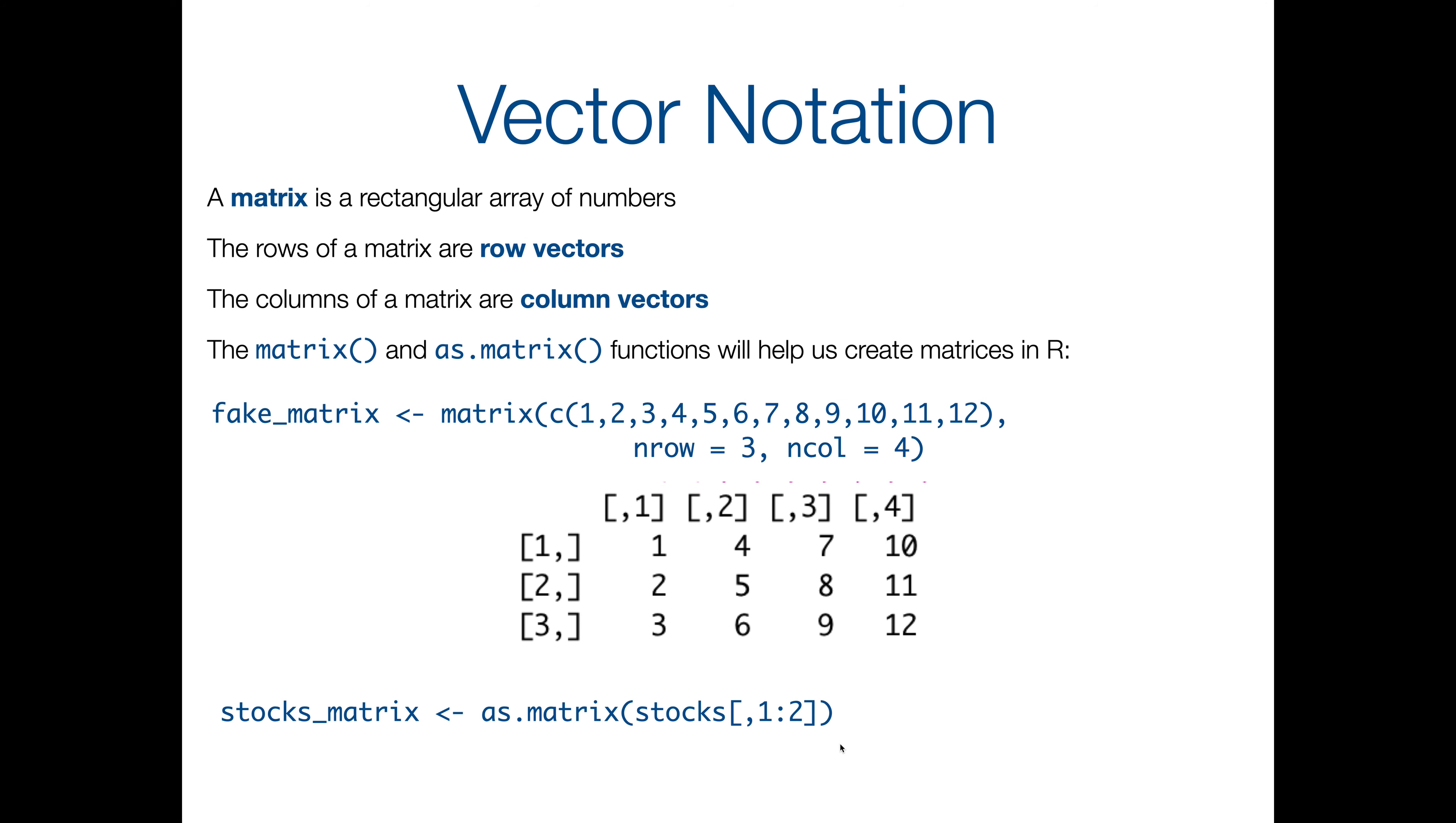And you can also turn something that already exists into a matrix, and the as.matrix function can be helpful there. These are not the only two ways you can accomplish this. I'm sure there are other functions that do it. These are the standard ones. Also you can use these two in slightly differing ways, but these are just two examples of how to do it. With the as.matrix function, what I did is I took the stocks data, so I read the 2006 stocks data in and called it stocks, and I said okay take all of the rows, so nothing comma the first two columns, 1 comma, 1 colon 2. So that's the vector from 1 to 2. And then I told it turn that into a matrix.